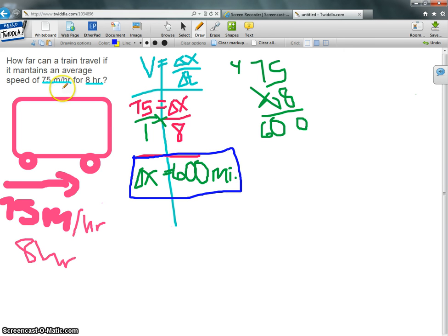To review, first you annotate. You basically look for what the question is giving you and what it is asking for. How far. Next, you draw a picture and you plug in what you have. If it gives you the velocity, you put in your velocity. And if it gives you time, you plug in time.